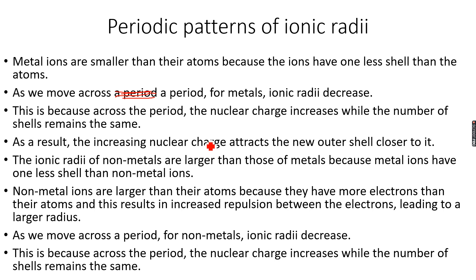The ionic radii of non-metals are larger than those of metals because metal ions have one less shell than non-metal ions. Non-metal ions are larger than their atoms because they have more electrons than their atoms, and this results in increased repulsion between the electrons. Since electrons are negatively charged, they repel each other, which leads to a larger radius.